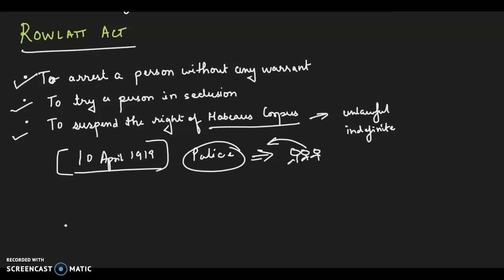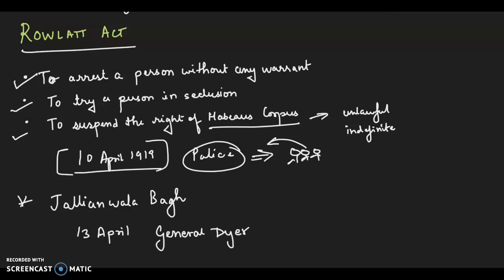On 13 April, a large crowd assembled at Jallianwala Bagh, protesting against the arrest of leaders who had criticized the government for passing the Rowlatt Act. General Dyer blocked the exit of the park and fired on the unarmed crowd, who had no weapons for their protection. This resulted in the death of about 1,000 people. The killing of innocent people at Jallianwala Bagh shocked the entire nation. People in many North Indian towns protested against the brutal killings, and the government brutally suppressed these protests.